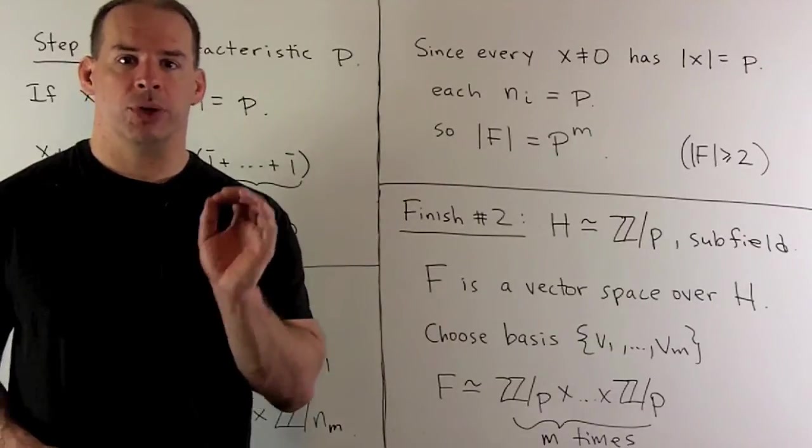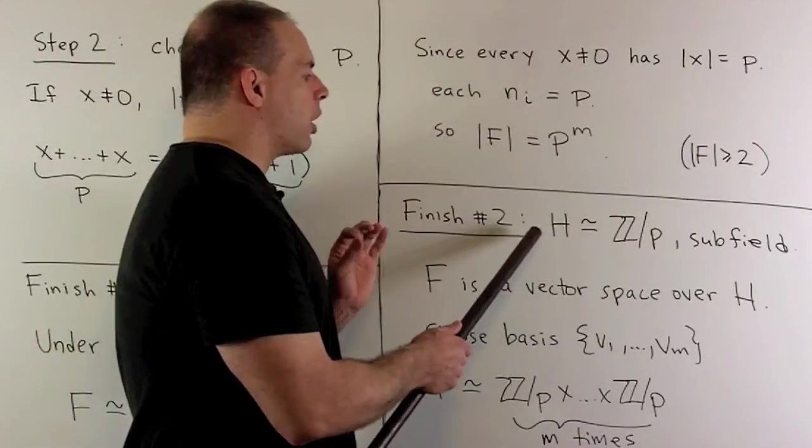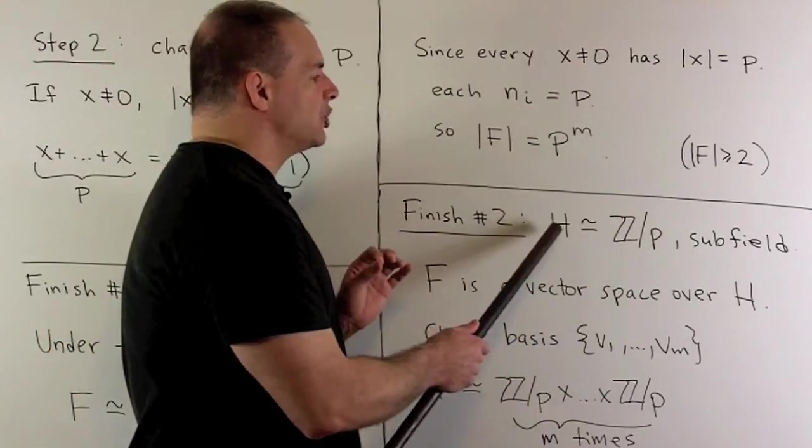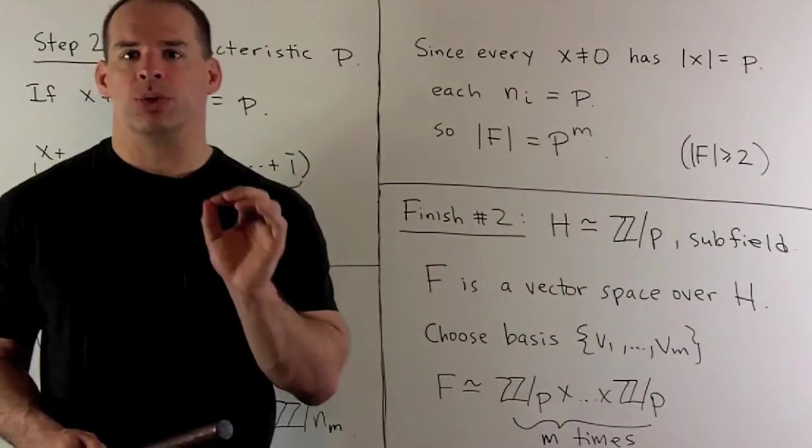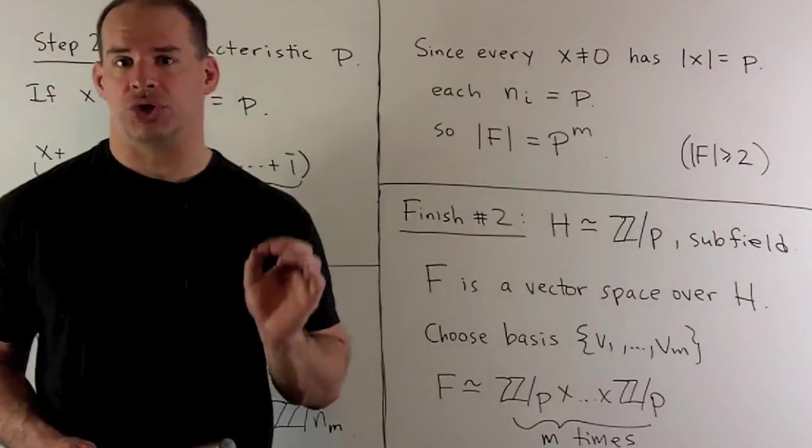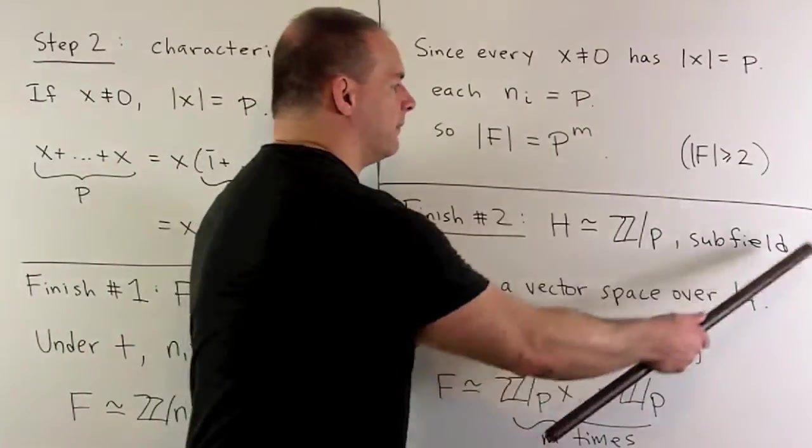Another way to finish, you can use linear algebra. So, if you note, our subgroup H is going to be isomorphic to Z mod p. And Z mod p carries more than just a group structure, it actually carries a field structure. So, you can show that H is going to be a subfield of F.